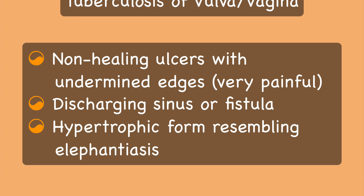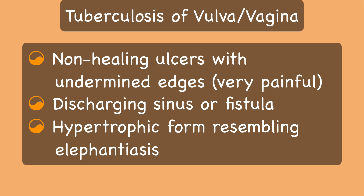Tuberculous involvement of the vulva or vagina is uncommon. Rarely, the patient may present with non-healing ulcers with undermined edges which are very painful, or a discharging sinus or a fistula, or very rarely a hypertrophic form resembling elephantiasis.